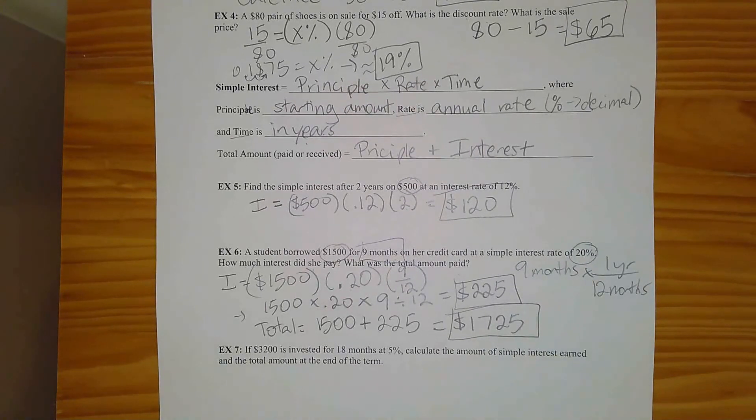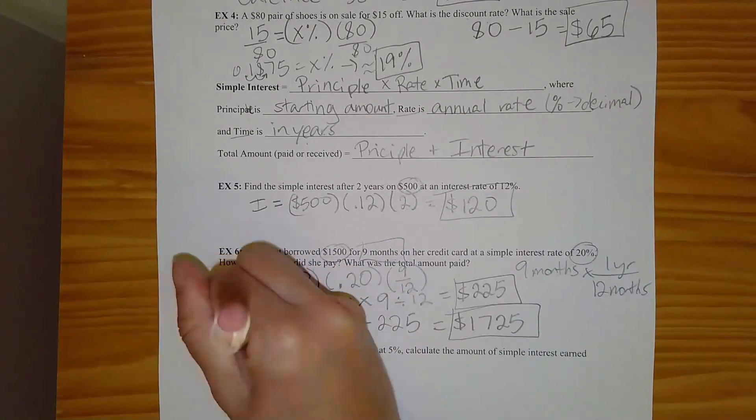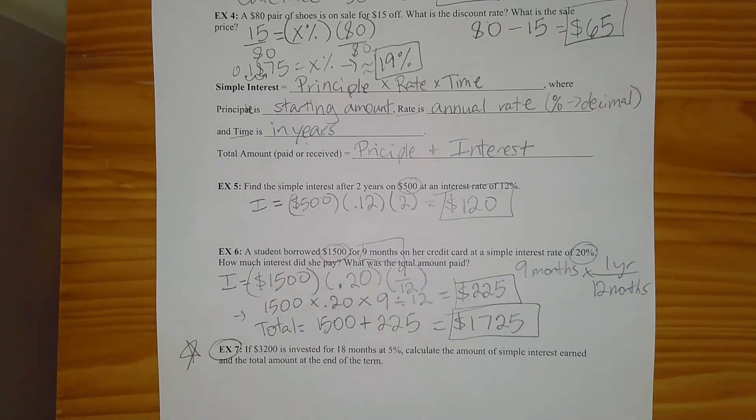Last one says if $3,200 is invested for 18 months at 5% interest, calculate the amount of simple interest earned and the total amount end of the term. I think I'm going to let you guys try this one because it's pretty similar to example six. So let's try one before I let you go. And we'll see how it goes. So pause your video.